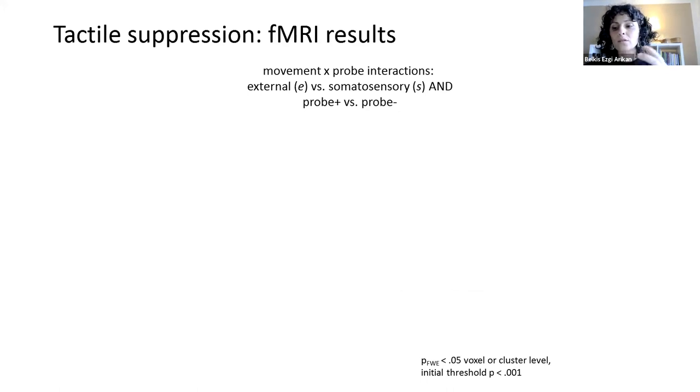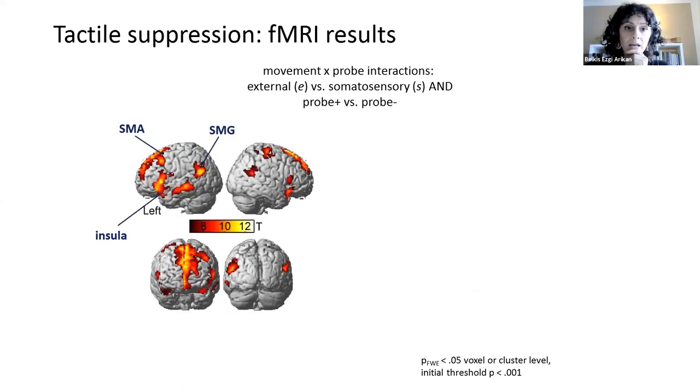In order to assess bold activation associated with suppression, we focused on the interaction between movements, so these different movements, and whether there was a probe presented or not. So in this condition, you see we contrast as external with somatosensory reaching movements and also for probe present and absent trials. And these are the results.